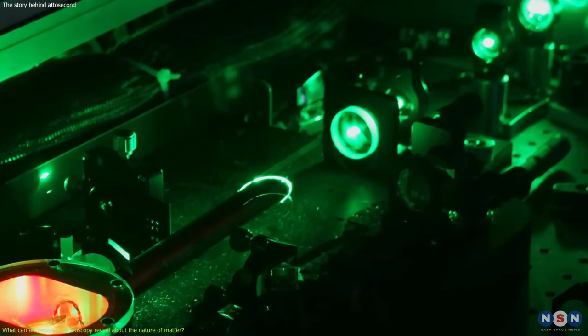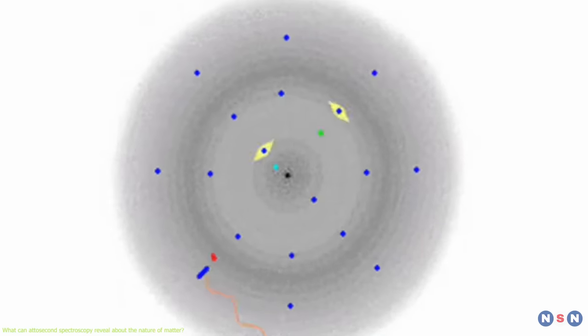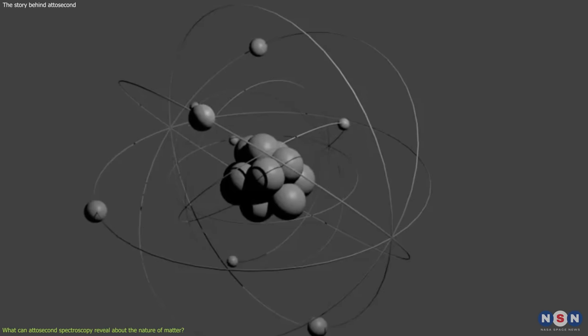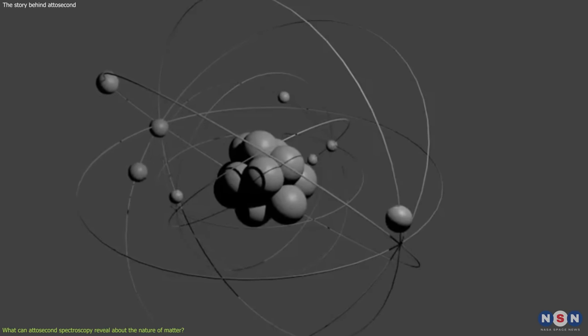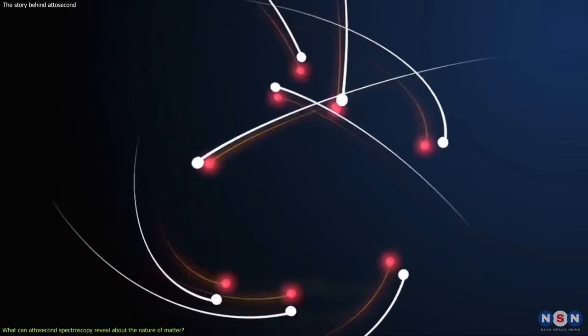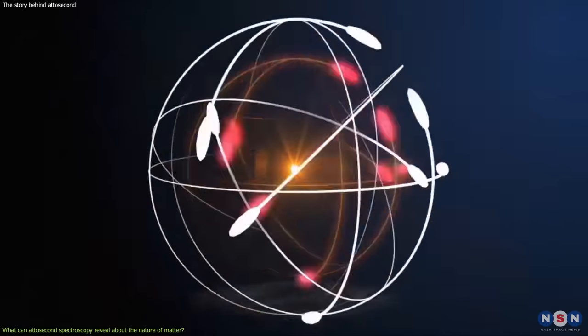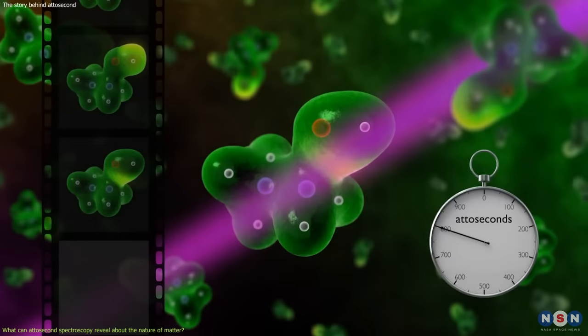Attosecond spectroscopy can measure the time delay between the emission of electrons from different atomic orbitals, which are the regions where electrons are most likely to be found around the nucleus of an atom. This can tell us how the shape and size of the orbitals affect the ionization process and how the electrons interact with each other and with the laser field.